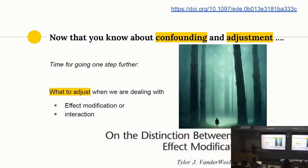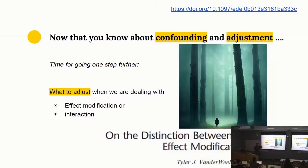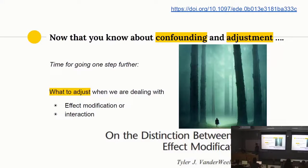Now that you know about confounding from the previous week and adjustment from this week, I want to talk about something else: effect modification or interaction. Can anybody tell me the difference between effect modification and interaction? These two terms are used interchangeably because the estimation procedure is exactly the same — you just add an interaction term in your model. But conceptually they may be slightly different, and there is a paper at this DOI number that is very helpful in understanding that difference.